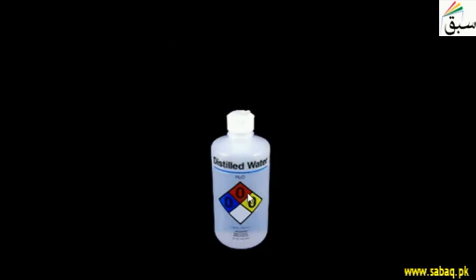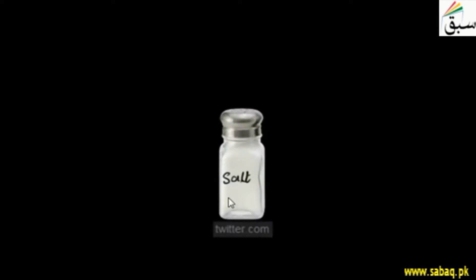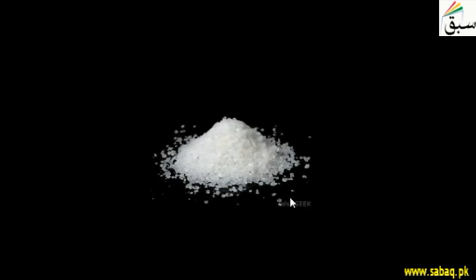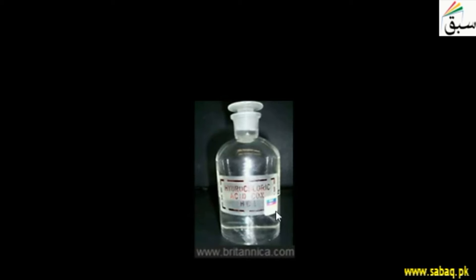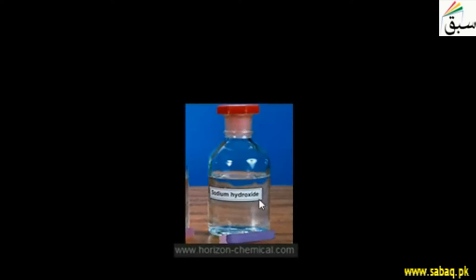After that, we will see which chemicals are required. First of all, we have distilled water. Besides, we have a salt solution. Next, sugar — we have table sugar, the kind we use in our houses. We also have hydrochloric acid. We will also use acetic acid solution.